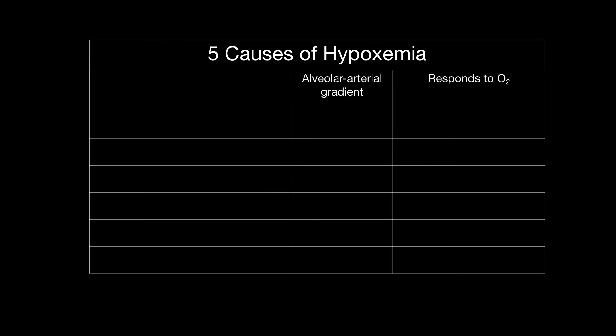The five causes can be differentiated from each other by looking at two things: the alveolar-arterial gradient, and whether the hypoxemia responds to oxygen.